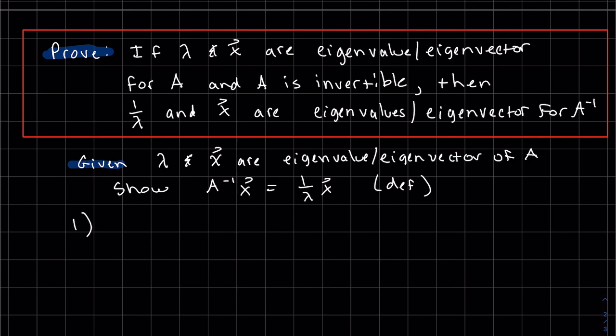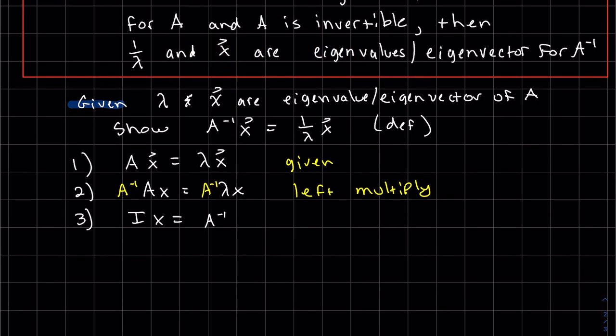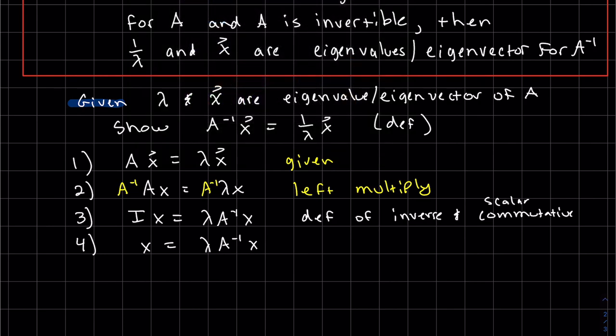Our first step, again, lambda and x are eigenvalue eigenvectors of A. So we can start off with that definition. Ax equals lambda x, given. Left multiply by A inverse. So clearly, this is the definition of inverse, and I did the same thing, I did commutative property of a scalar and a matrix. So this step, since lambda is a constant, remember though, if A is invertible, we do not have a lambda equals 0, so we are allowed to do this. We saw that on the previous video in 5.1.